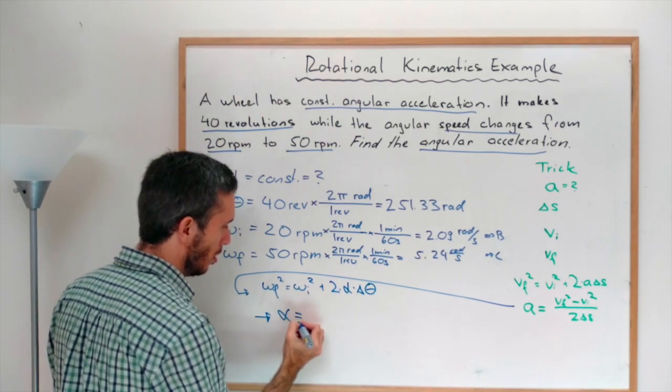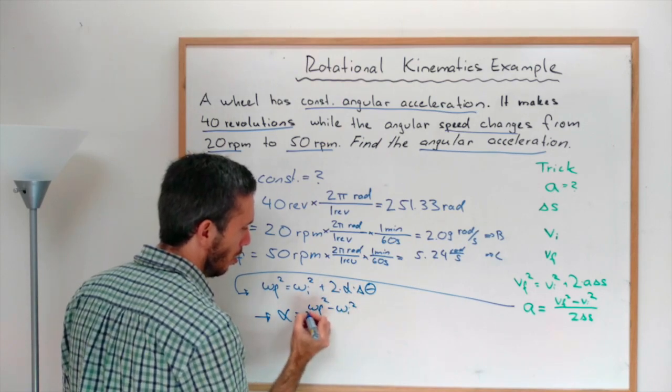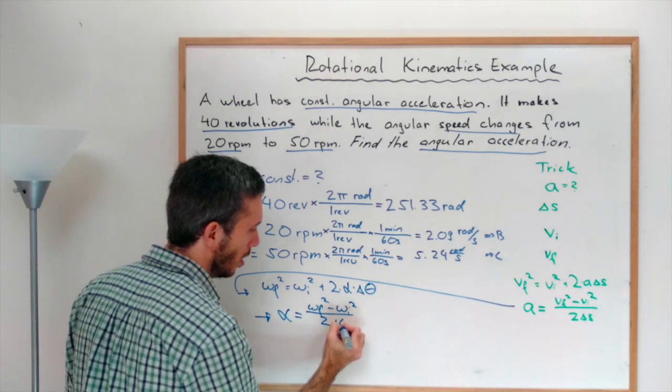Therefore, alpha is omega final squared minus omega initial squared over 2 delta theta.